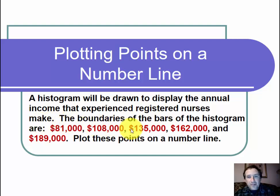The boundaries of the bars of the histogram are 81,000, 108,000, 135,000, 162,000, and 189,000. Plot these points on a number line.